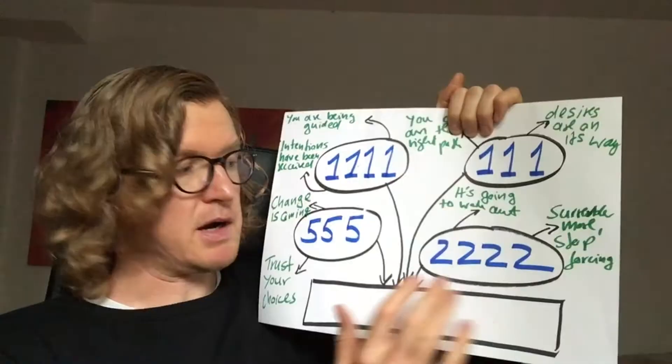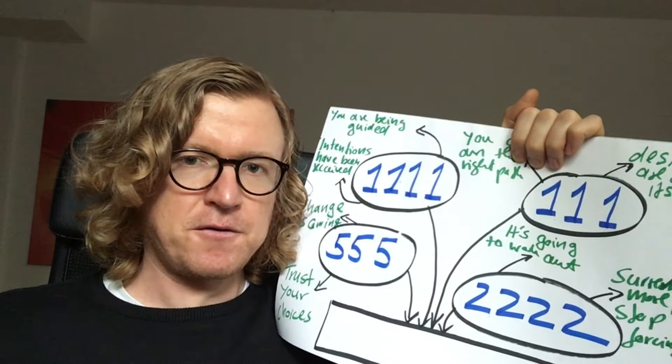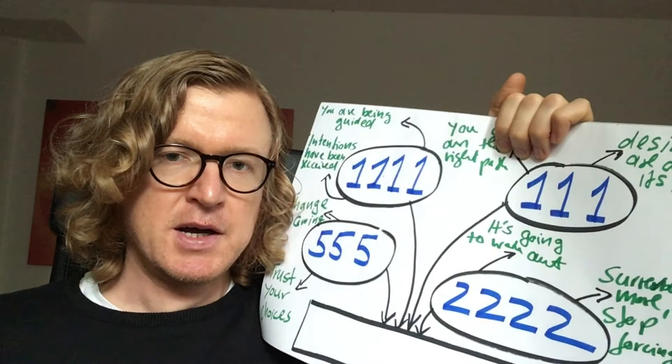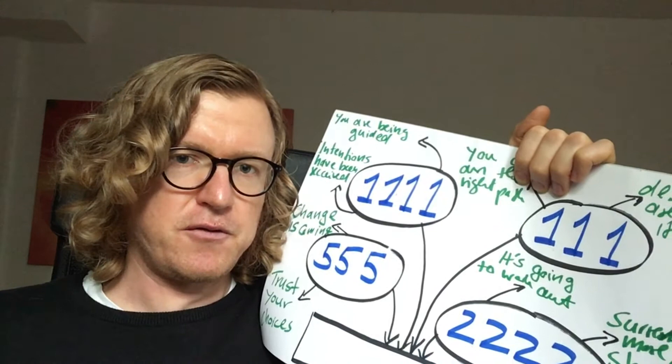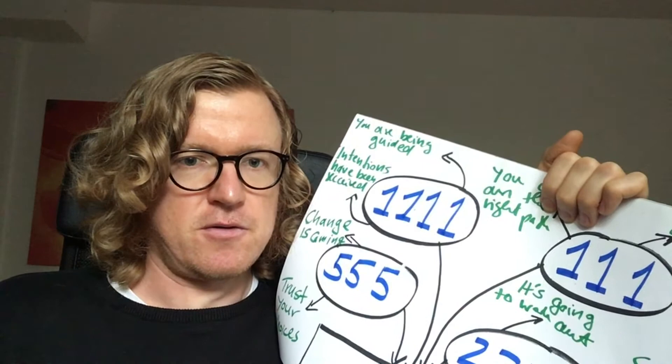Another core meaning of 2222 is to surrender more and stop trying to force an outcome. Stop trying to manipulate or control an outcome or a result into existence by obsessing over it, by investing more energy and more time than you actually have. A sign of that is that you feel frustrated, that you feel stressed and tired a lot because you put so much energy into it to force the outcome. You're trying to do all the work yourself. So that's what this number is telling you.